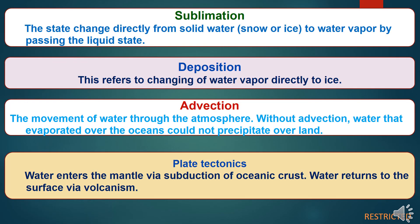Other components include: Sublimation — the state change directly from solid water, meaning snow or ice, to water vapor bypassing the liquid state. Deposition — the changing of water vapor directly to ice. Advection — the movement of water through the atmosphere; without advection, water that evaporated over the oceans could not precipitate over land. Plate tectonics — water enters the mantle via subduction of oceanic crust and returns to the surface via volcanic processes.